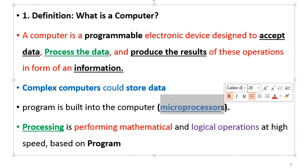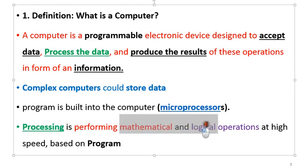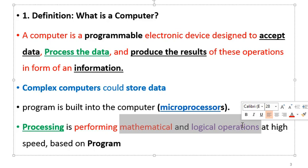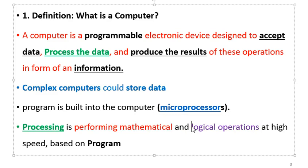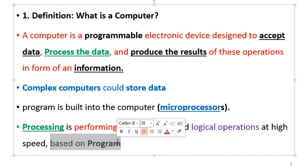Now let us define the terms used in the definition. We mentioned the ability of processing data. Processing is performing mathematical and logical operations — operations like addition, subtraction, division, multiplication, integration, and differentiation — and logical operations involving comparison of two or more things to decide whether a condition is satisfied or not. This processing is done at a very high speed. All of this is done based on the program built into the computer.